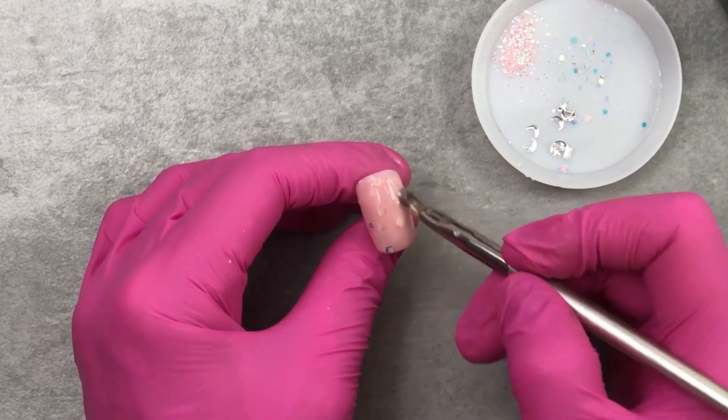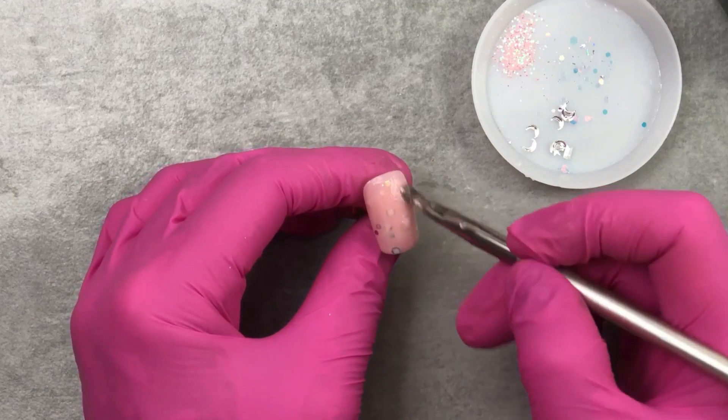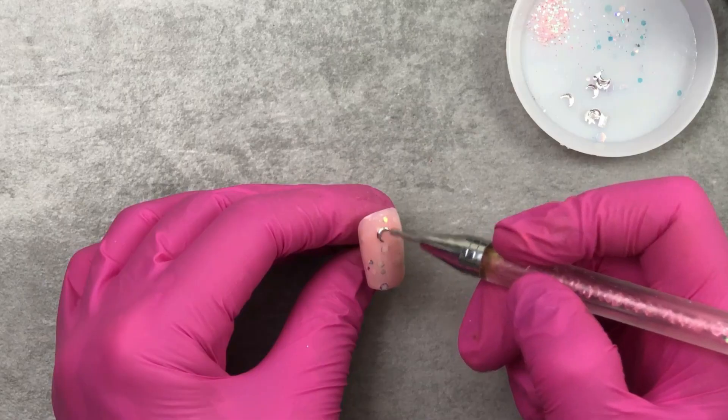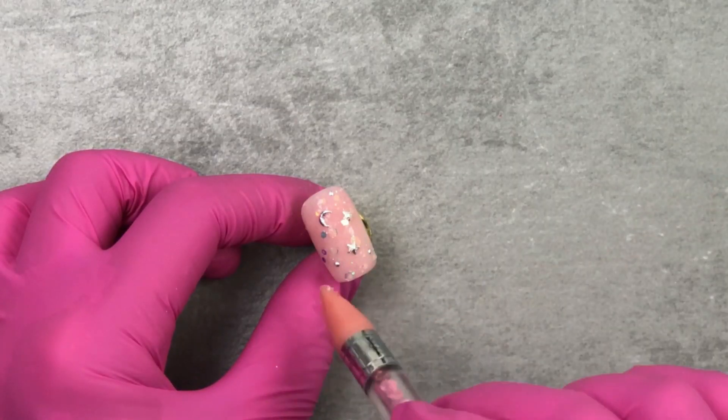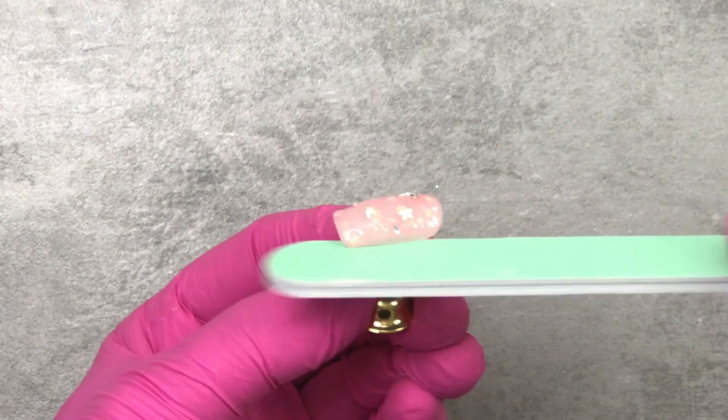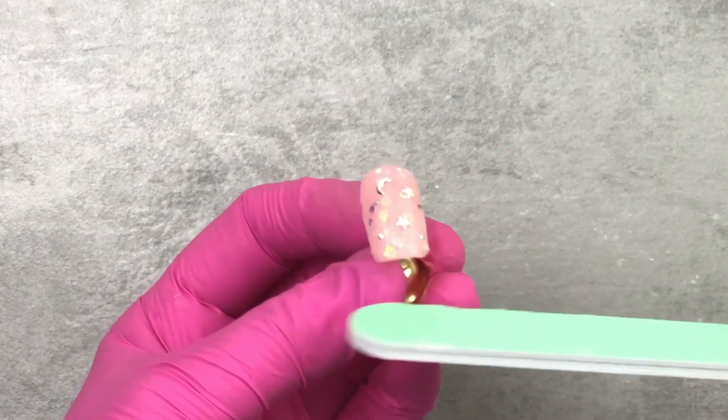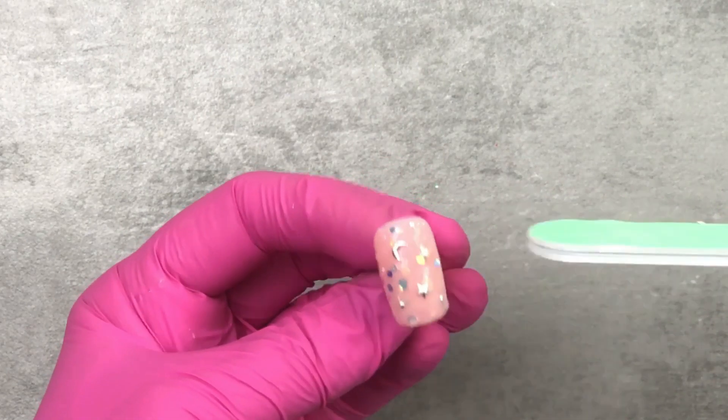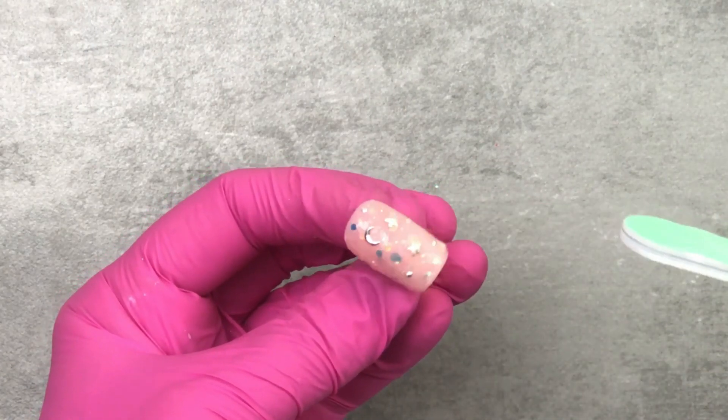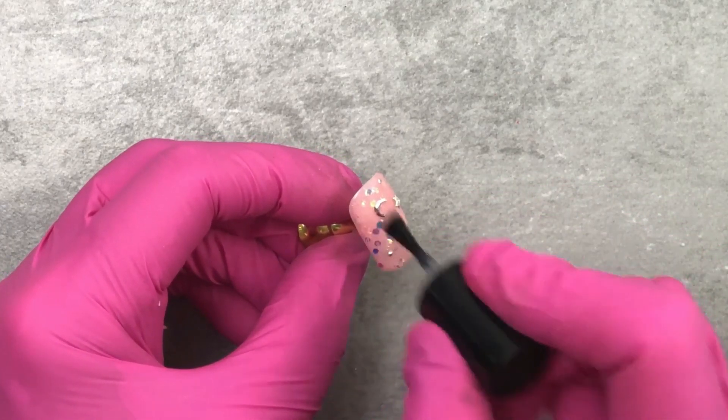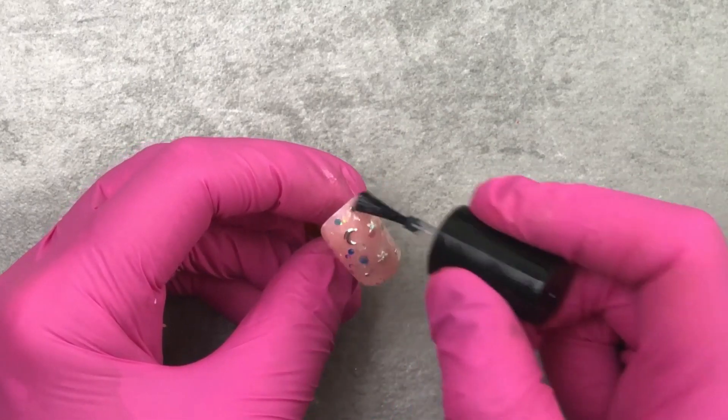For the final layer I'm going to apply some UV glue. And add on a moon and some stars. And just a little bit more glitter. Next, file the edges to make them smooth. Apply a top coat. Cure and it's done.